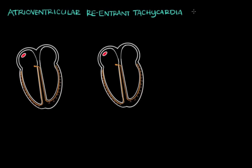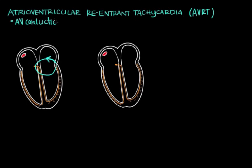Atrioventricular reentrant tachycardia, also known as AVRT, is a type of supraventricular tachycardia where you have an abnormal loop of electricity, or reentrant circuit, going around and around between two pathways. You need two pathways: one being the normal AV conduction system, and the other being an accessory pathway — an extra pathway that exists between the atrium and the ventricle, hence atrioventricular reentrant tachycardia.